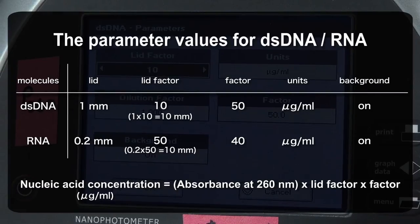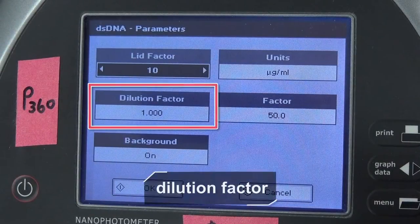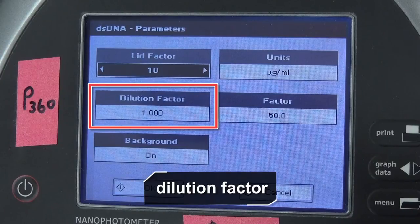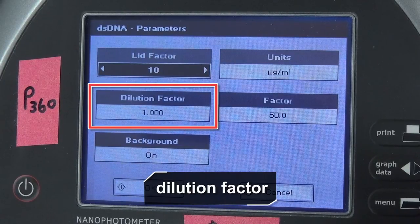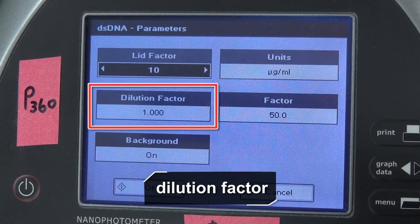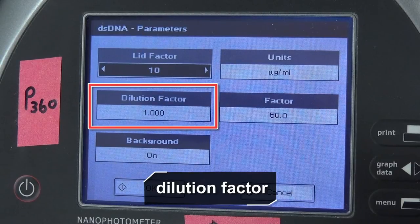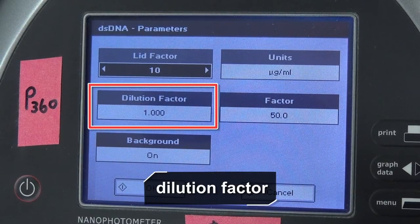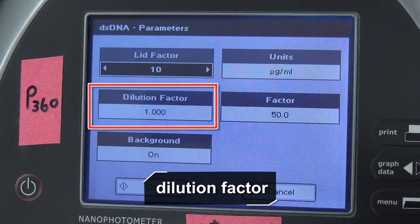Since the sample isn't diluted, the dilution factor remains as 1.000. If the sample has been diluted, you should change the factor so the spectrophotometer can convert the result into the original concentration for you.